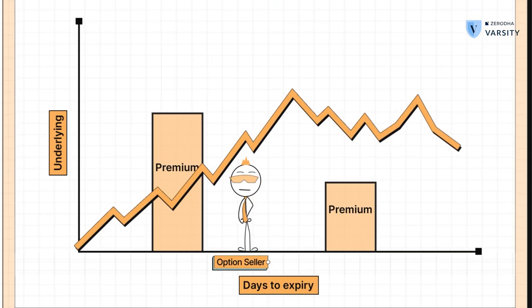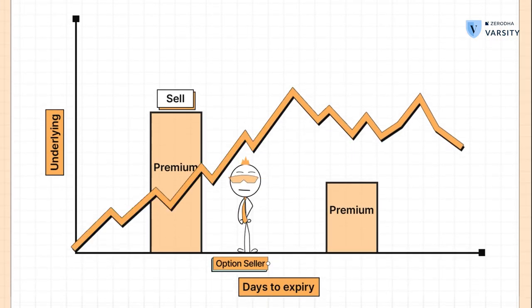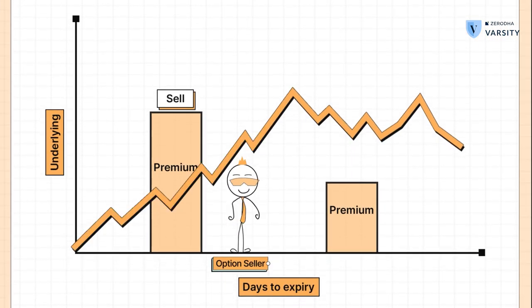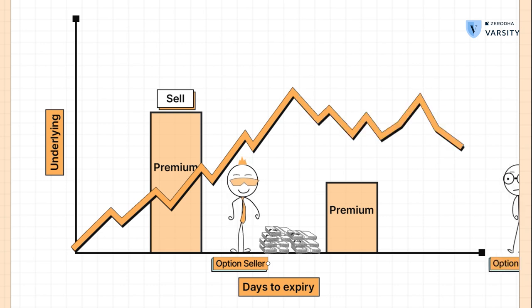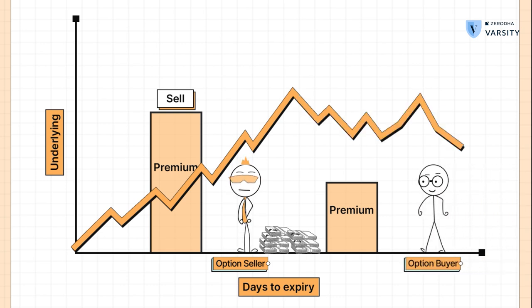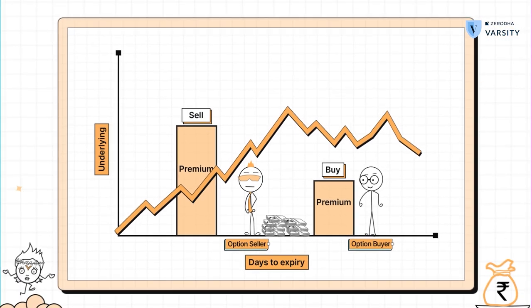As an option seller, you want to sell options when the volatility is high, which means you get to pocket a large premium, and after you sell, you should expect the volatility to go down. As an options buyer, it's best to buy the option when the volatility is low, and ideally, after you buy, the volatility should increase so that you benefit from the appreciation in premium.